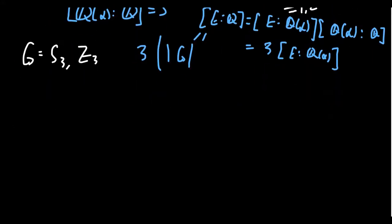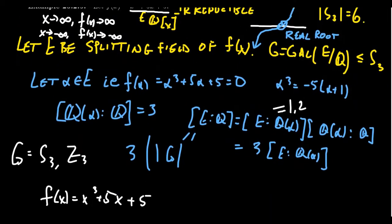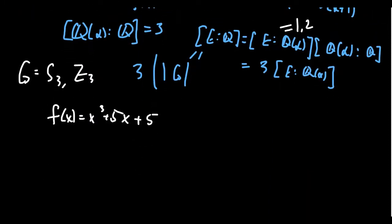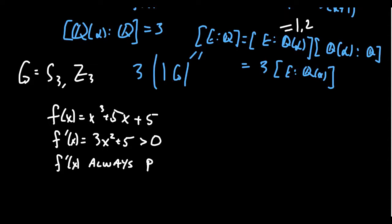Let's think about f(x) = x³ + 5x + 5 more carefully. Taking its derivative gives f′(x) = 3x² + 5. In the real number system, x² is always non-negative, so 3x² is non-negative, and adding 5 makes this always positive. Since f′ is always positive, f is always increasing. Because the function is always increasing, it has one and only one real root.